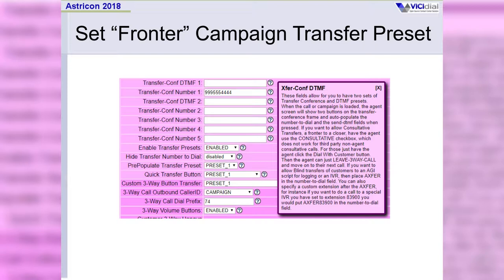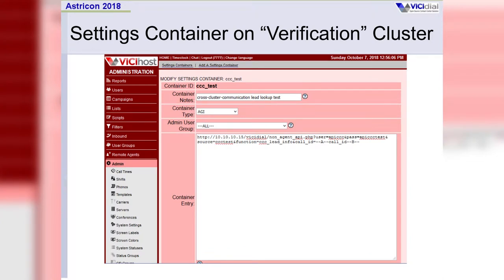Still on the purple fronter system, this is the campaign that the agents are in. You'll notice we've set a transfer conference number of area code 999-555-4444, which doesn't exist. That's kind of important — you wouldn't want to overlap with a real phone number, although we have had clients that have done that. What we're going to do, as you'll see in another screen, is create a DID entry under that on the closer system.